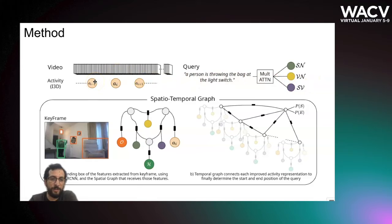For each of the activity representation we use a keyframe to extract the object and human features that are then used to feed the human and object node.